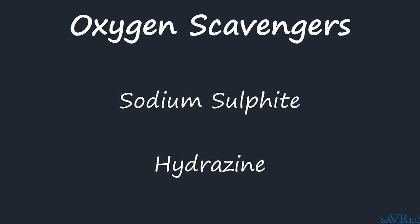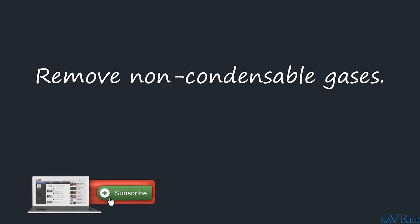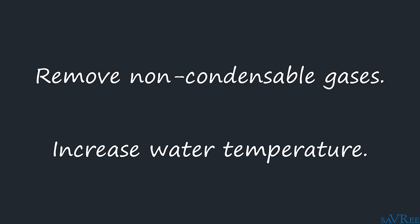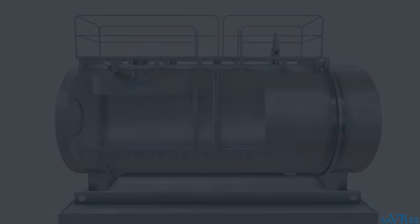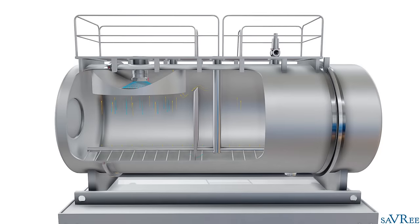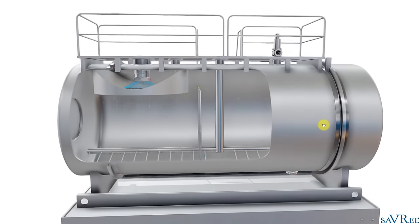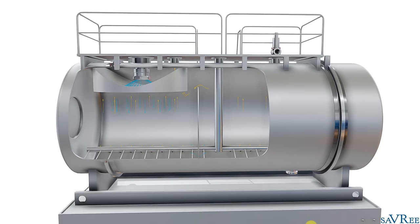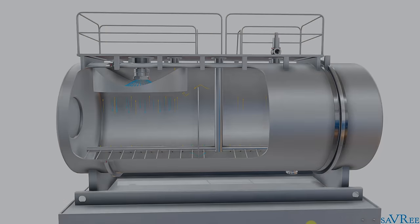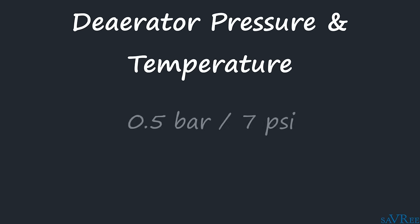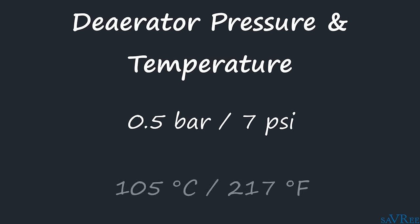Let's now have a look at our first deaerator design. I'll explain exactly how it works, how we can get those non-condensable gases out of the boiler feed water, and how at the same time we can increase the water's temperature so we don't thermal shock the boiler. Here's our first 3D model of a deaerator — I'll do a little spin so you can have a look at it. You can see it's horizontally orientated and is actually a pressure vessel, although the pressure is quite low — about 0.5 bar, which is about 7 psi. The temperature of the deaerator should be approximately 105 degrees Celsius, or 217 degrees Fahrenheit. Pressures and temperatures do vary based upon the deaerator design.